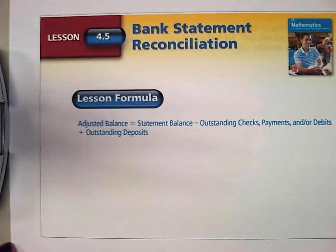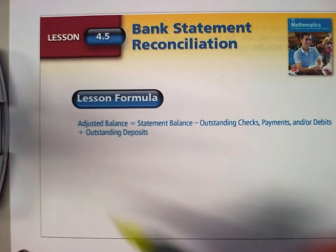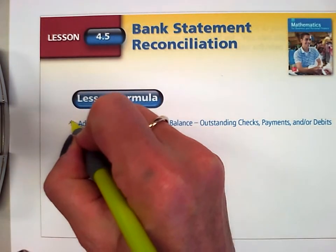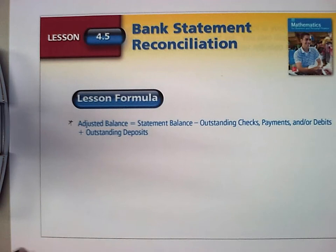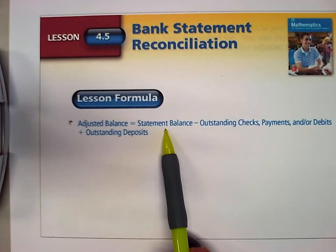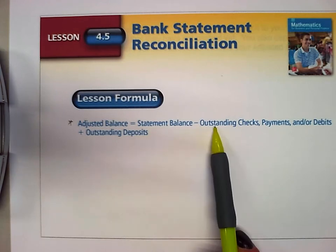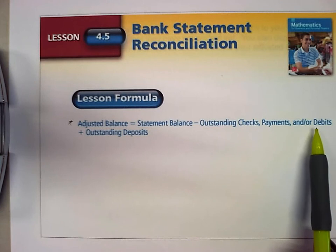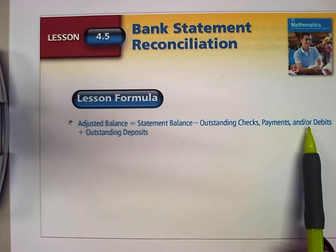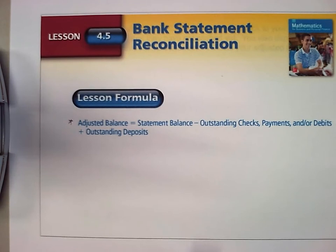Our lesson formula says that we are looking for an adjusted balance — your most up-to-date balance in your check register. We find the statement balance from our bank statement, then subtract any outstanding checks, payments, and/or debits that haven't cleared the bank yet, and then add in any outstanding deposits made after the bank statement was mailed.